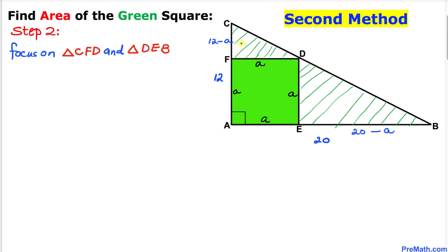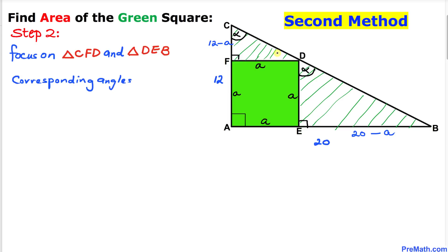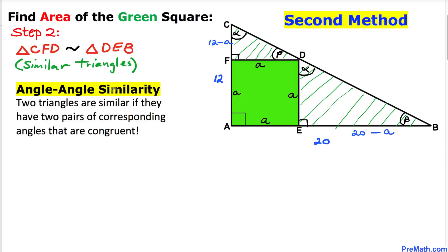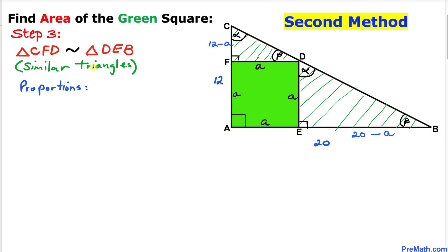Let's focus on two triangles: triangle CFD and triangle DEB. Both are right triangles. If I call one angle alpha, its corresponding angle is also alpha, and similarly for angle beta — they are corresponding angles. Therefore, triangles CFD and DEB are similar triangles by the Angle-Angle similarity theorem, which states two triangles are similar if they have two pairs of congruent corresponding angles.